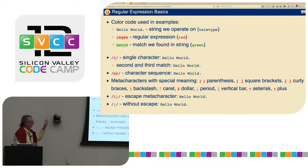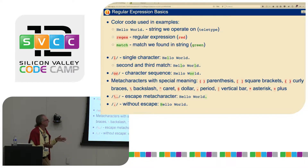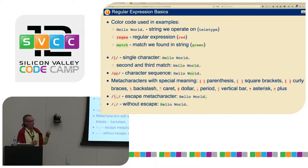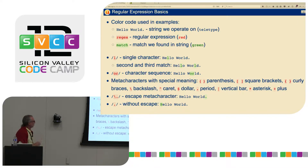In this presentation we have some color code. Anything that you see in red means that's a regular expression, or regex. Anything that you see in green — if you have a string and you apply a regular expression — the green part indicates what we are actually matching.